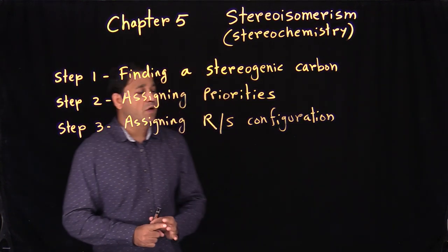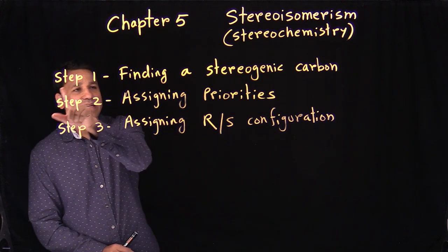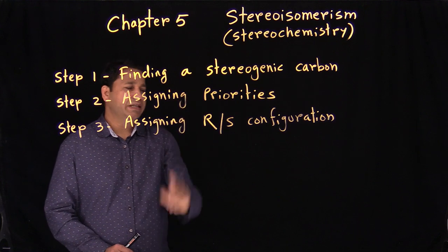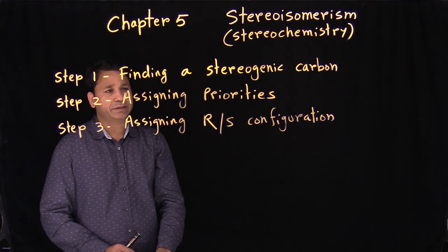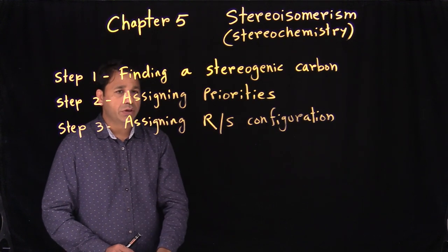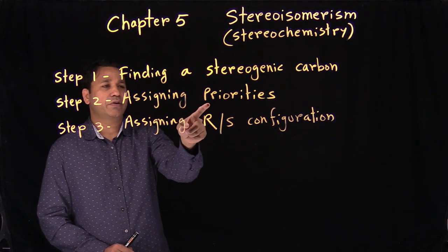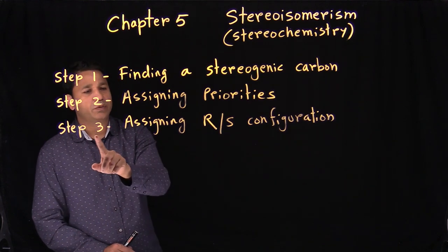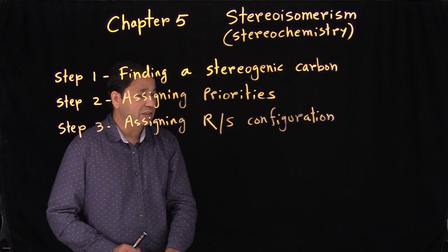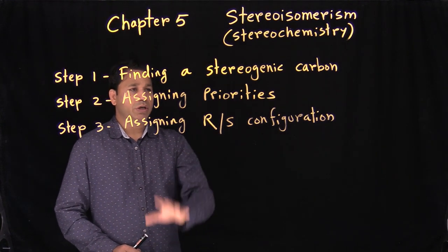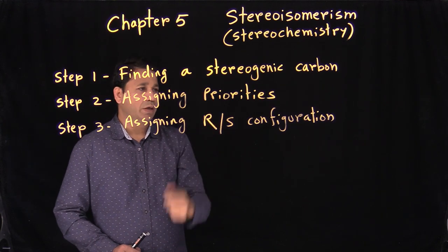This chapter can be divided into three different steps. Step one is finding a stereogenic carbon. Step two is assigning priorities. Step three is assigning R and S configuration — that's our ultimate goal. We'll go stepwise, and each step depends on the previous one.